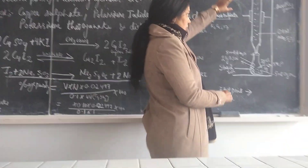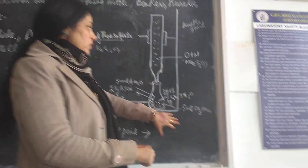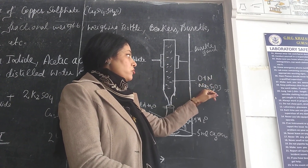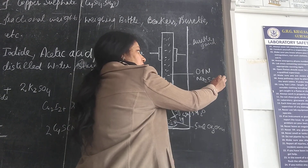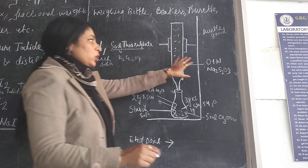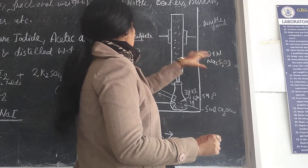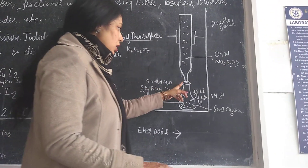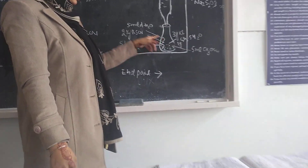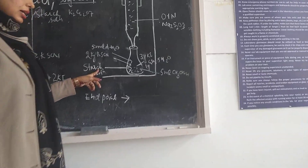This is the representation of the titration and our assay method. Here is your burette stand and your burette. In the burette, we need 0.1 normal sodium thiosulfate solution used as the titrant, because we know the concentration — it is already standardized using potassium dichromate. In the flask, we need 50 ml of distilled water and 2 grams of potassium thiocyanate as an indicator.